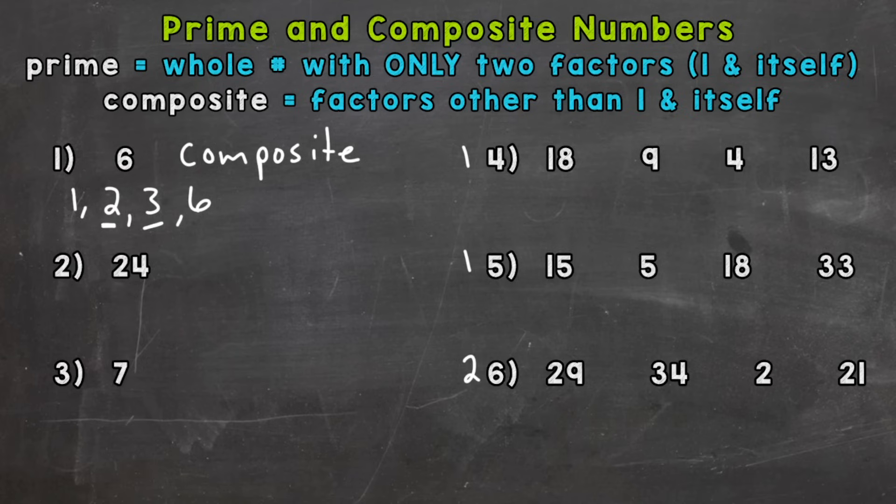Number two, twenty-four. Well, we know one and twenty-four. And twenty-four actually has a lot of factors or numbers that can multiply to get twenty-four. So we know two and twelve can multiply to get twenty-four, three and eight, and four and six. So we have a lot of different factors there for twenty-four. So this one is easily composite.